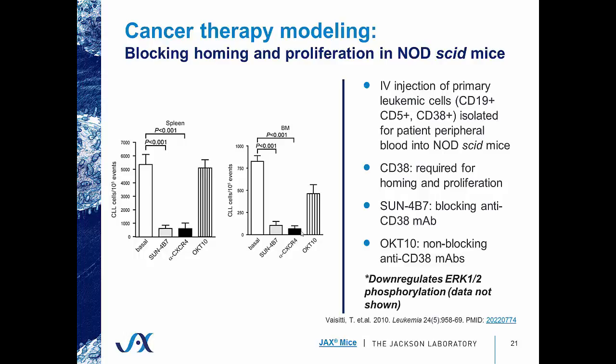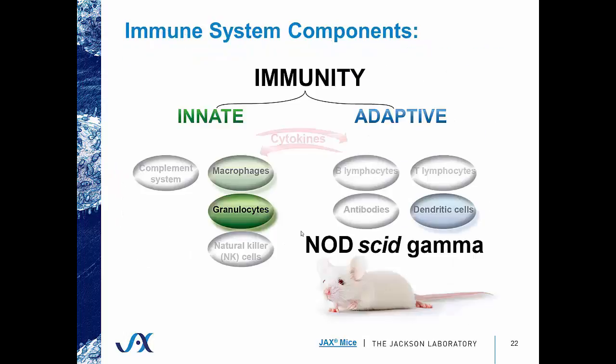They also demonstrated that their therapeutic antibody was able to down-regulate ERK-1 and ERK-2 phosphorylation, which has been shown to be involved in proliferation. The next immunodeficient mouse model is the NOD-SCID gamma, or NSG mouse. NSG mice are essentially NODSCIDs but also have the gamma mutation — a knockout of the IL-2 receptor gamma chain — which results in a lack of natural killer cell function, which has been shown to be a major impediment of human immune cell engraftment.